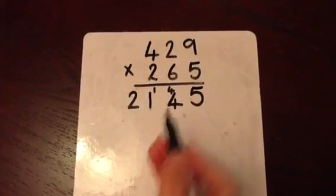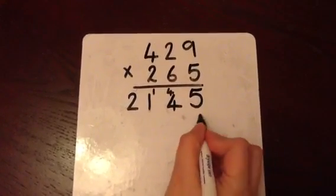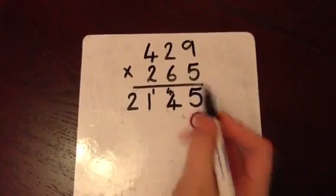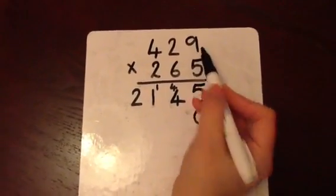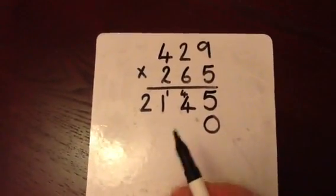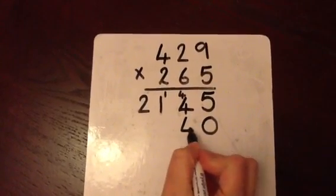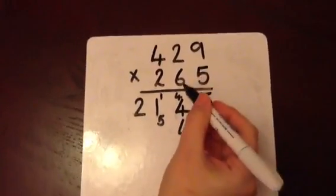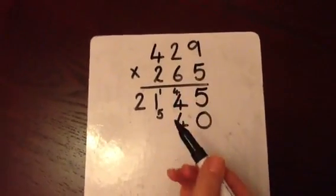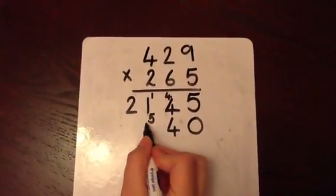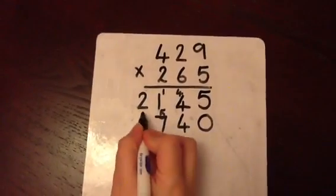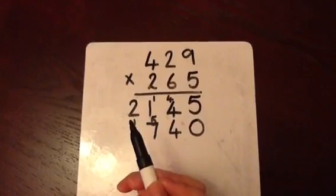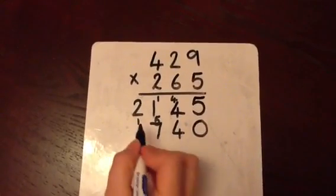Now multiplying by 10. As we're multiplying by 10, we can add 0 to the units column. So 6 multiplied by 9 is 54. The 4 goes in the tens column and we carry the 5 across. 6 multiplied by 2 is 12 and the 5 we've carried over makes 17. The 7 is in the hundreds column and the 1 is carried across. 6 multiplied by 4 is 24 and the 1 makes 25.